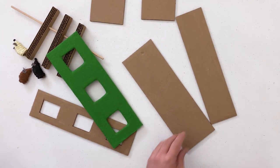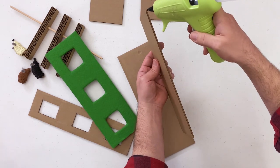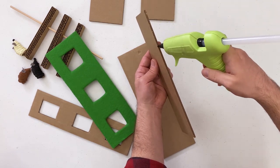All right, now it's time to glue together our box. We're just going to use a little hot glue on the edge and try to be really careful so it looks nice and clean.